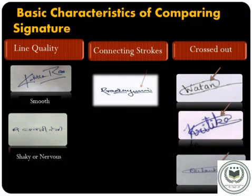We talk about the basic characteristics of comparing signatures. On the basis of these characteristics, we can identify the writer's state of mind and also their personality simply by analyzing them. Firstly, we discuss the first characteristic: line quality.